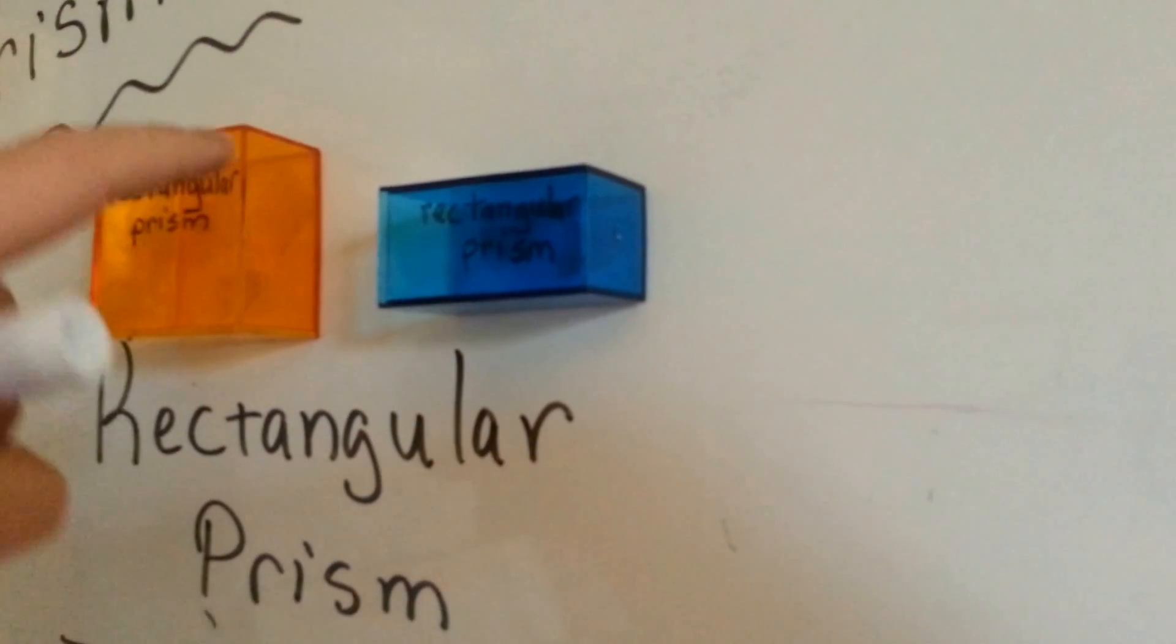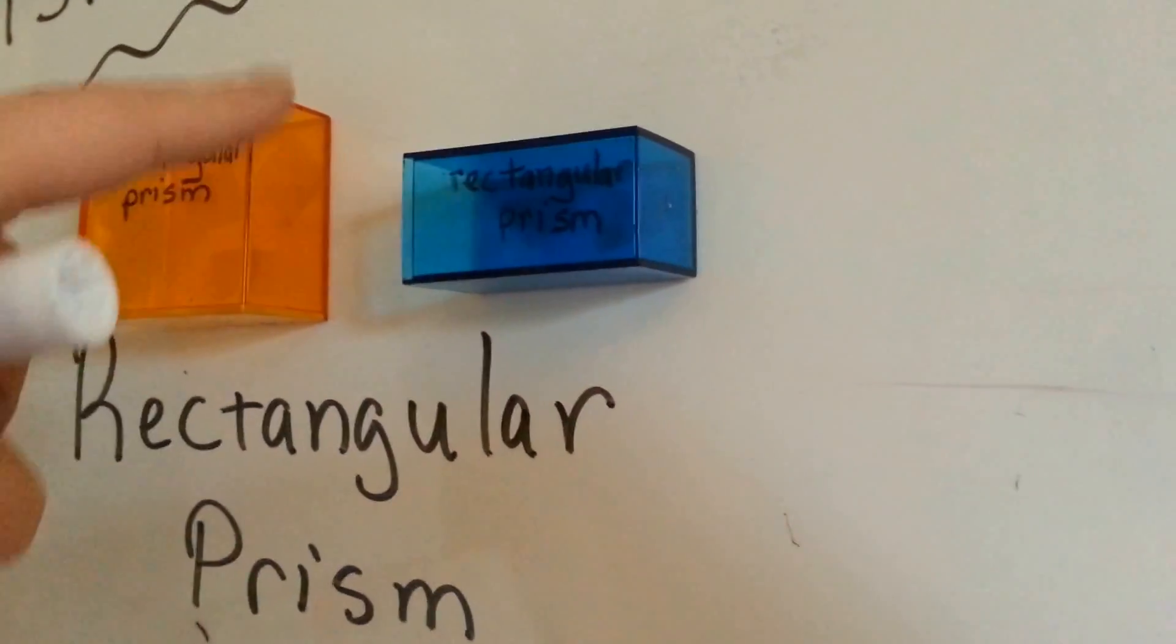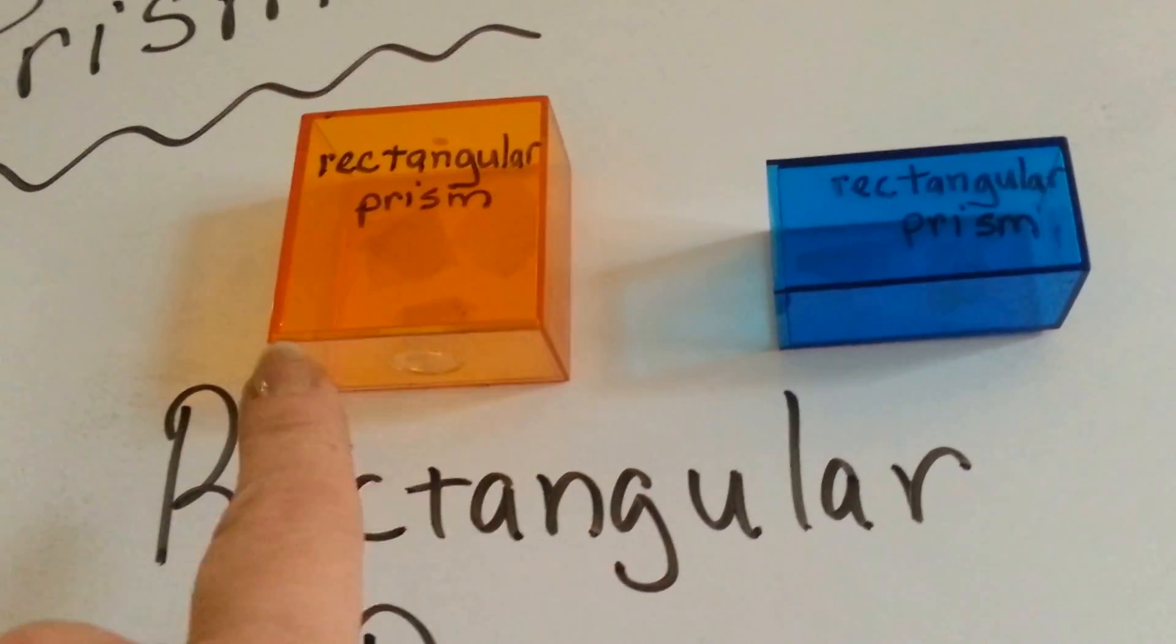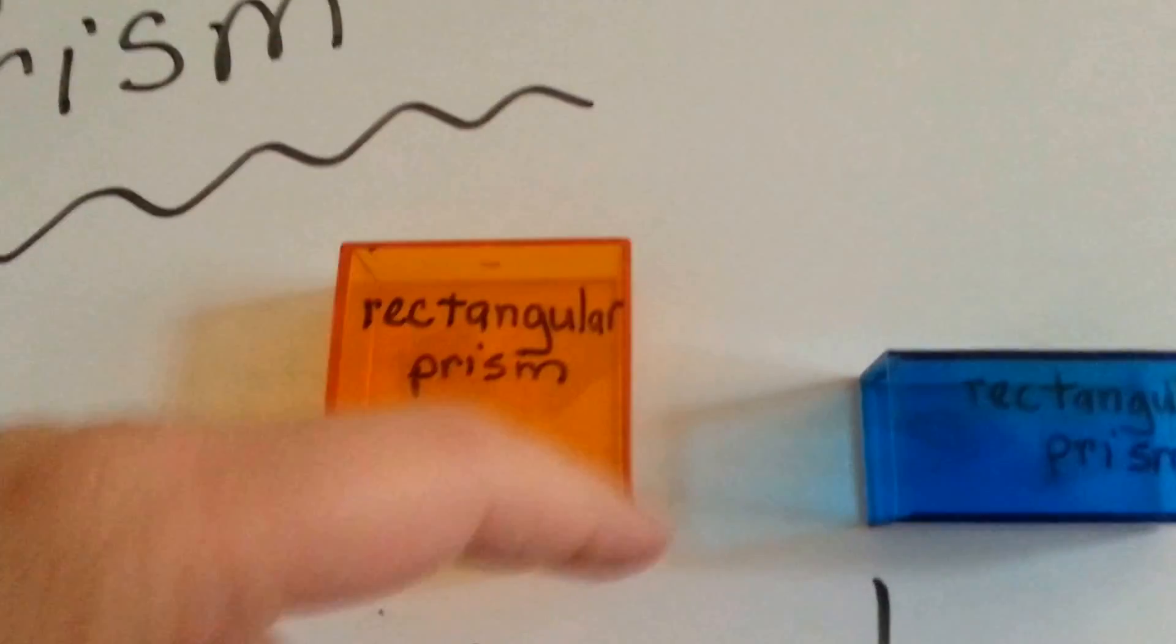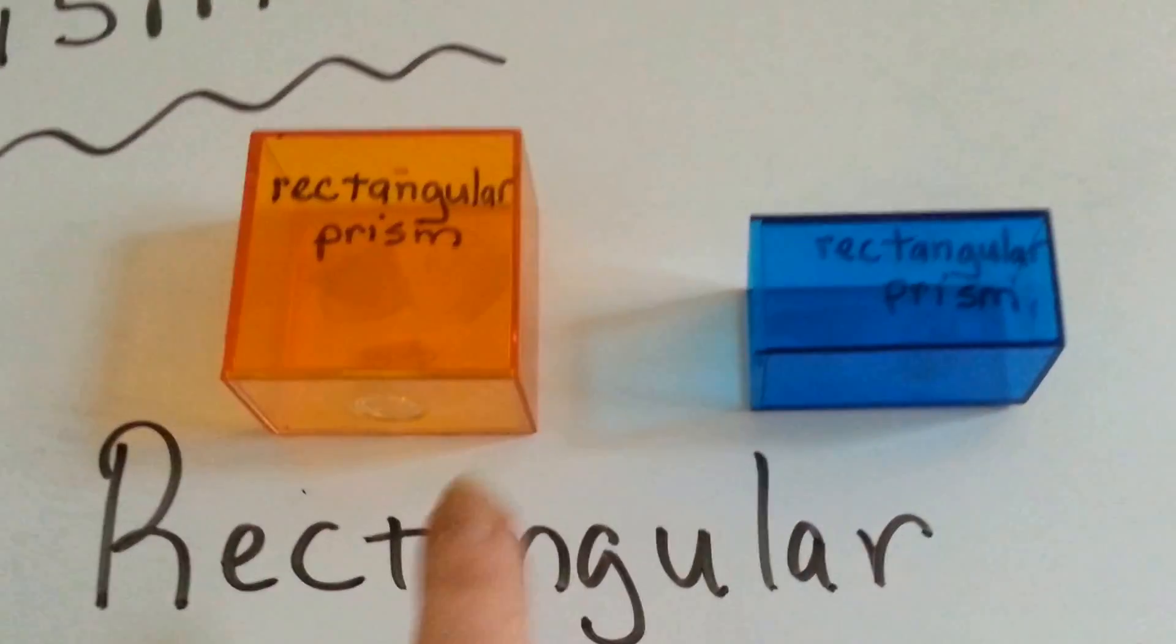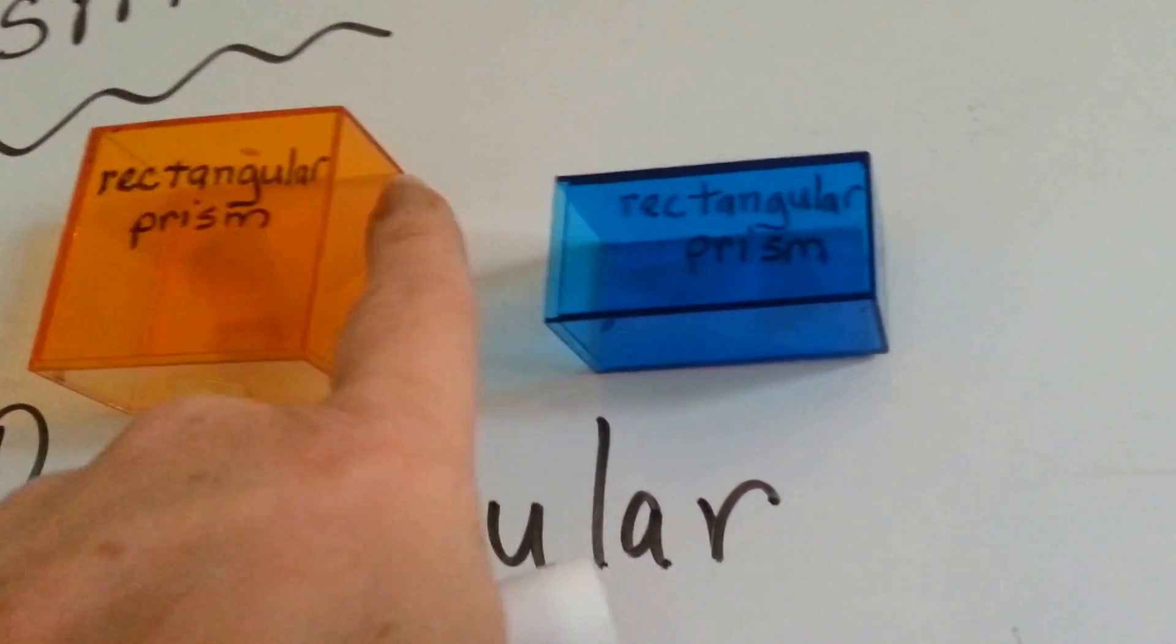Can you see how it's shaped like a rectangle here? And on the bottom, it's shaped like a rectangle. Now, it may be a square in the front, but there's a rectangle there, and there's a rectangle there.